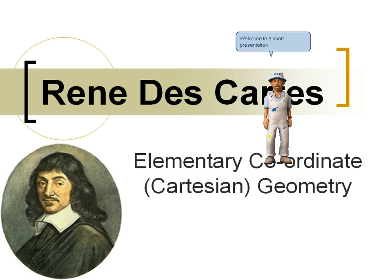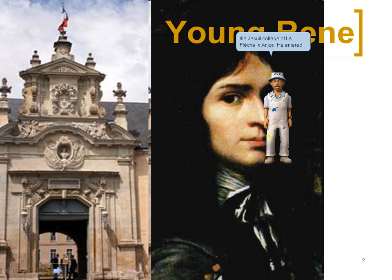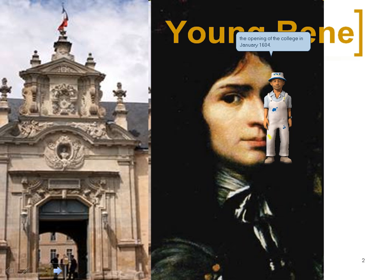Welcome to a short presentation on René Descartes and an Introduction to Cartesian Geometry. Descartes was educated at the Jesuit College of La Flèche in Anjou. He entered the college at the age of eight years, just a few months after the opening of the college in January 1604.